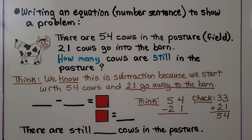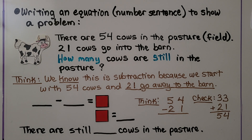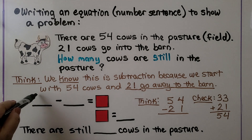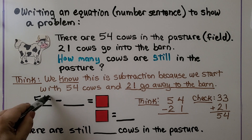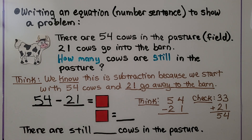Writing an equation — a number sentence — to show a problem. There are 54 cows in the pasture. A pasture is a field. 21 cows go into the barn. How many cows are still in the pasture? Do you see the clue words? 'How many still?' We know this is subtraction because we start with 54 cows and 21 go away to the barn. We have 54 to start, 21 go into the barn, and it's equal to a box. We need to find out what the box equals.